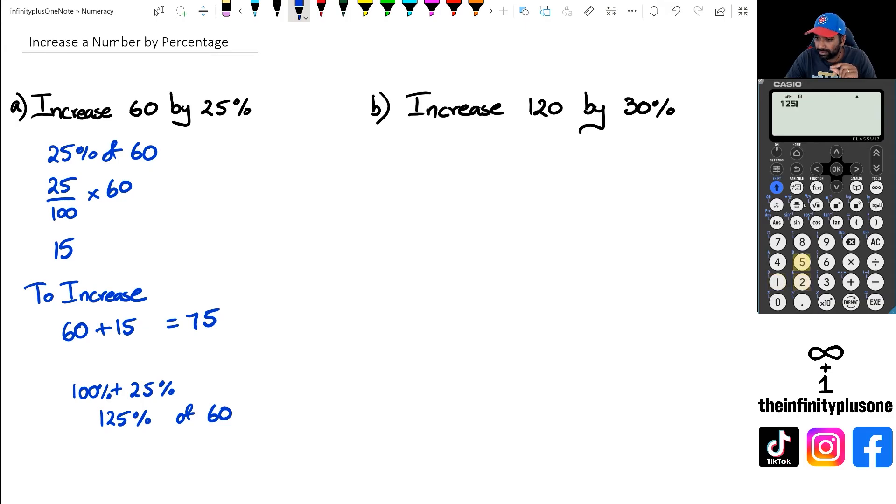So a quick way to increase by 25% is you would go 60 multiplied by 1.25, because the 1 stands for 100% and the 0.25 is the 25% increase. So if we do 60 times 1.25, that's the other way of getting that answer really quickly.